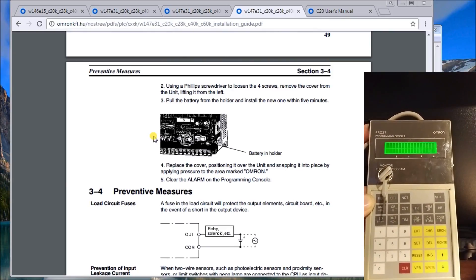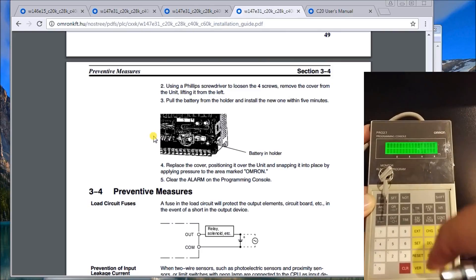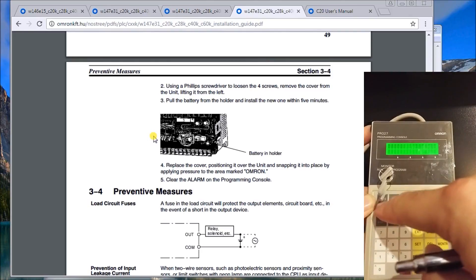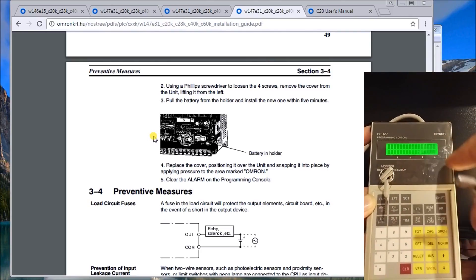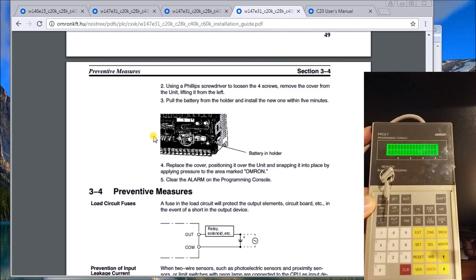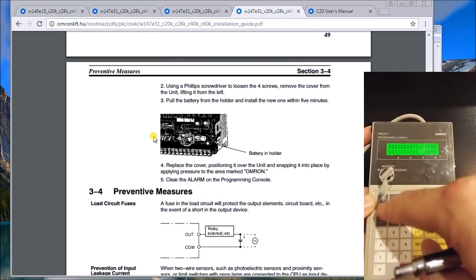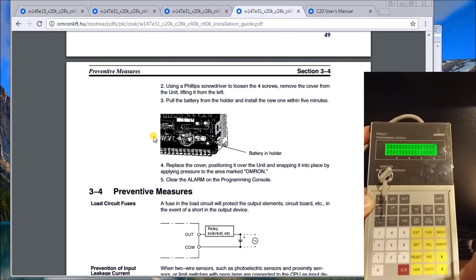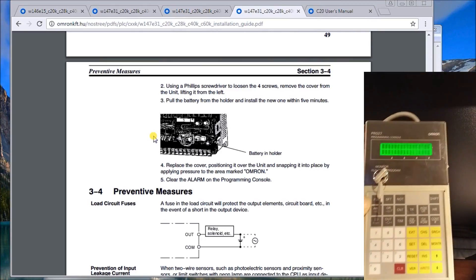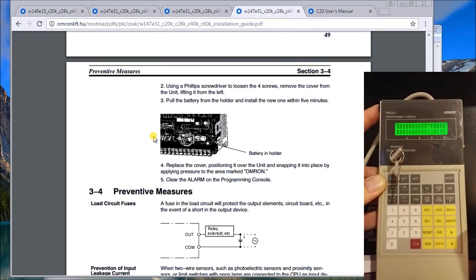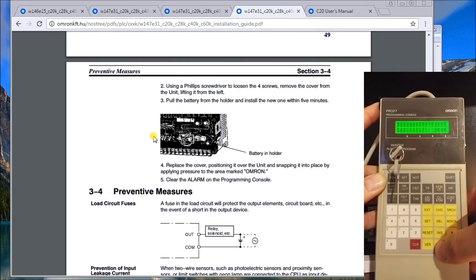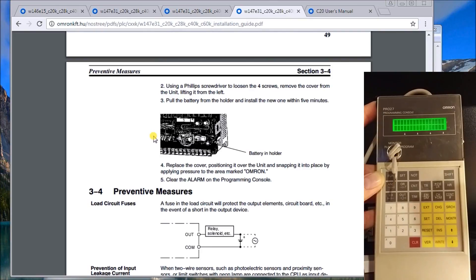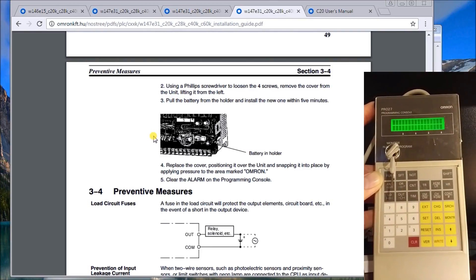So what I'm going to do is on the first address - let's see, right now I have load two, so I remember that. So if I hit function 01, which is the end statement - again, everything's located in the manual - and I then hit write. What write will do is enter that data into the PLC, as well as advance it to the next instruction.